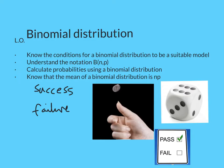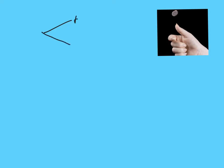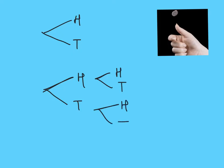At GCSE Maths, we would often draw a tree diagram to show these. If we stick with the idea of flipping a coin — if I just flipped 1 coin, I would either get heads or tails. If I flipped 2 coins, my first coin I'd get heads or tails, and my second coin I'd get heads or tails.